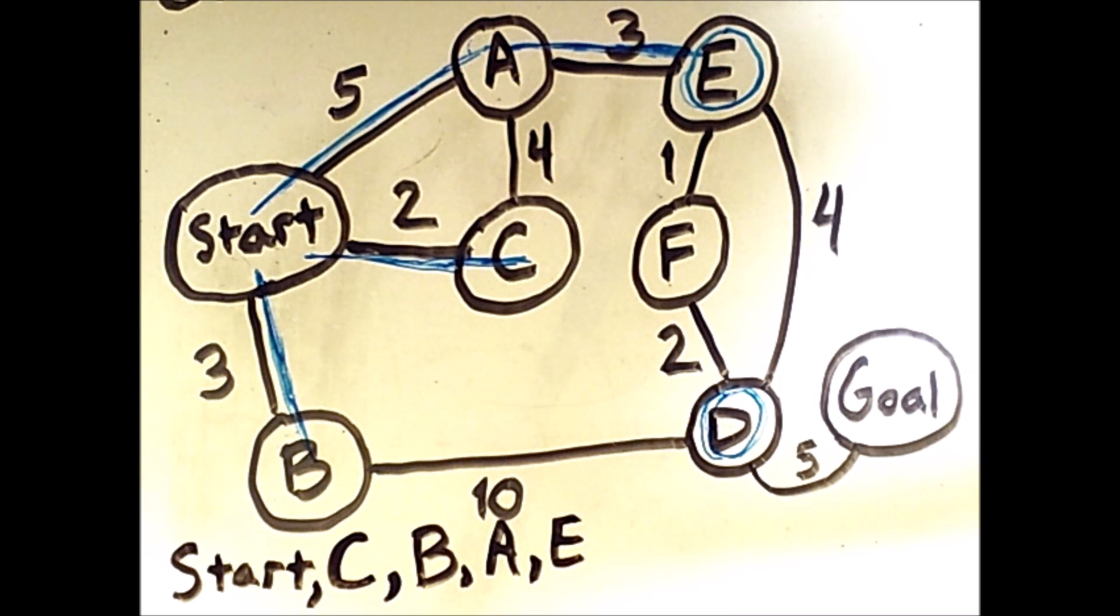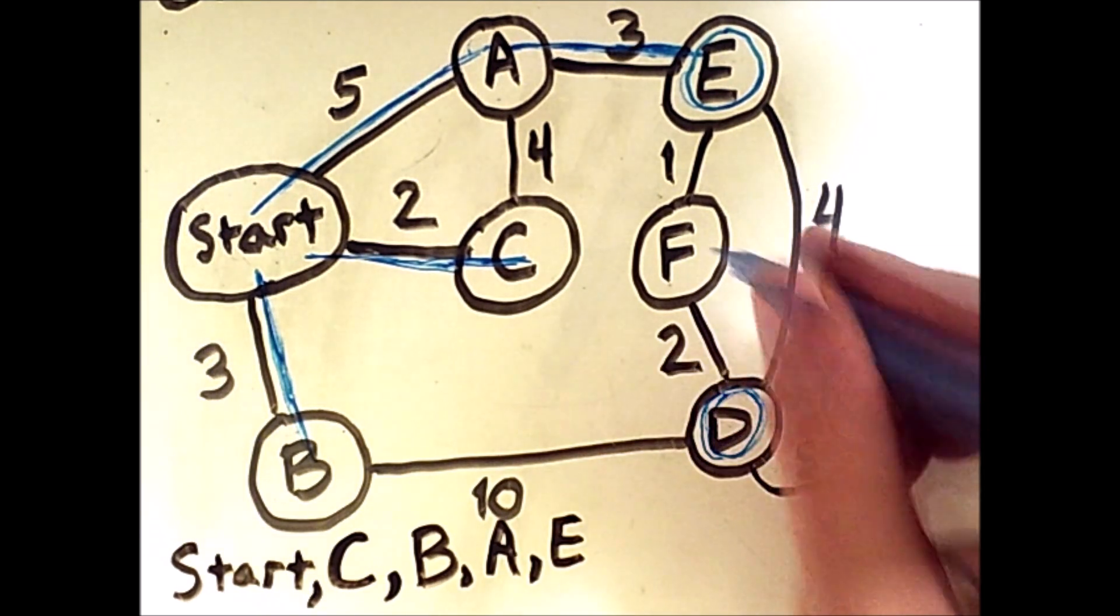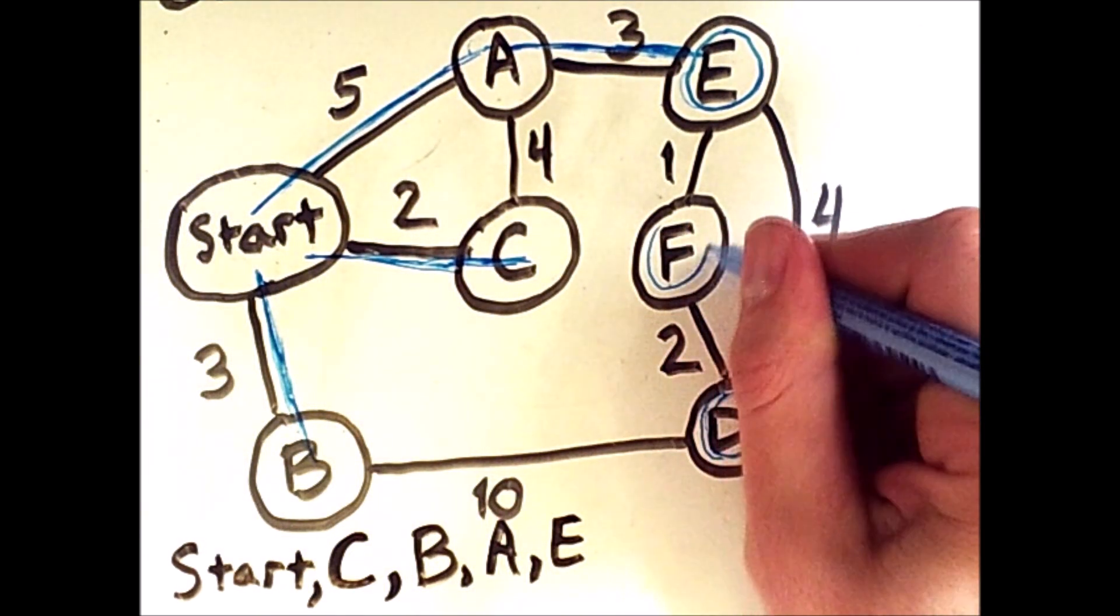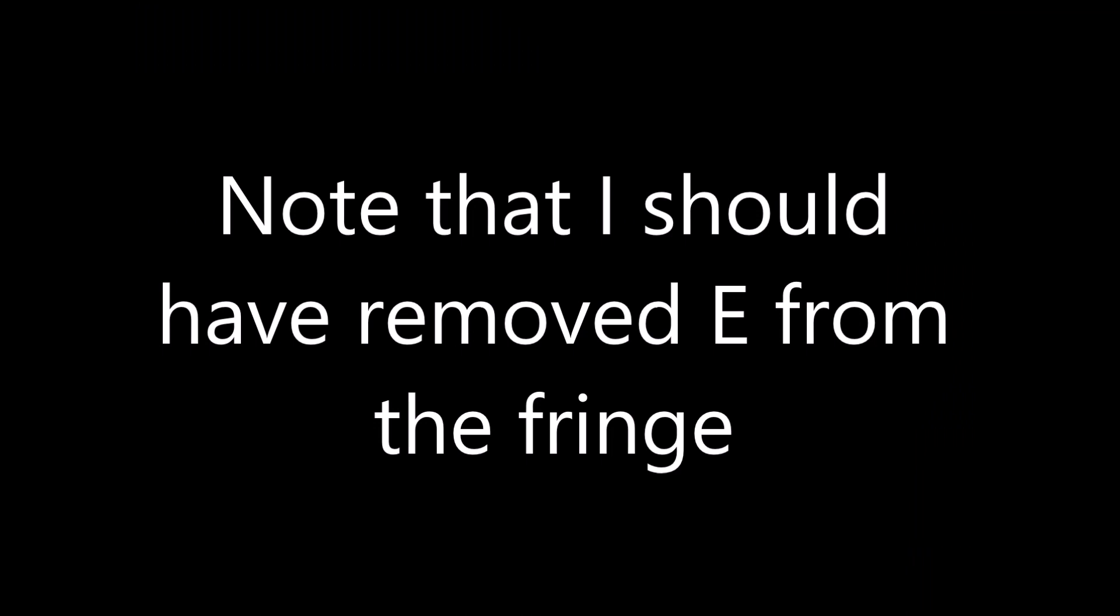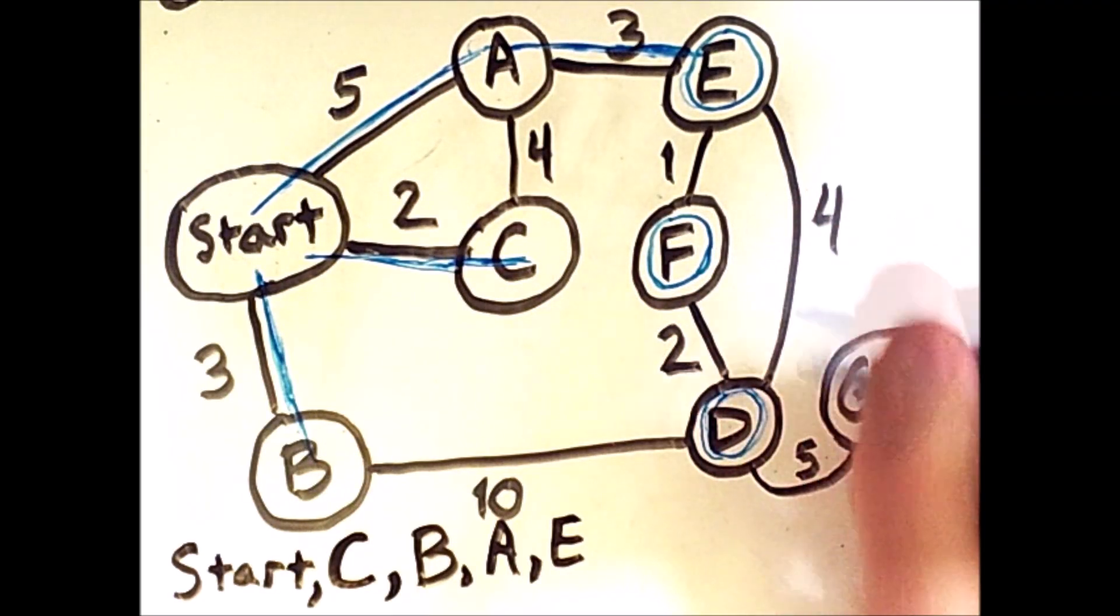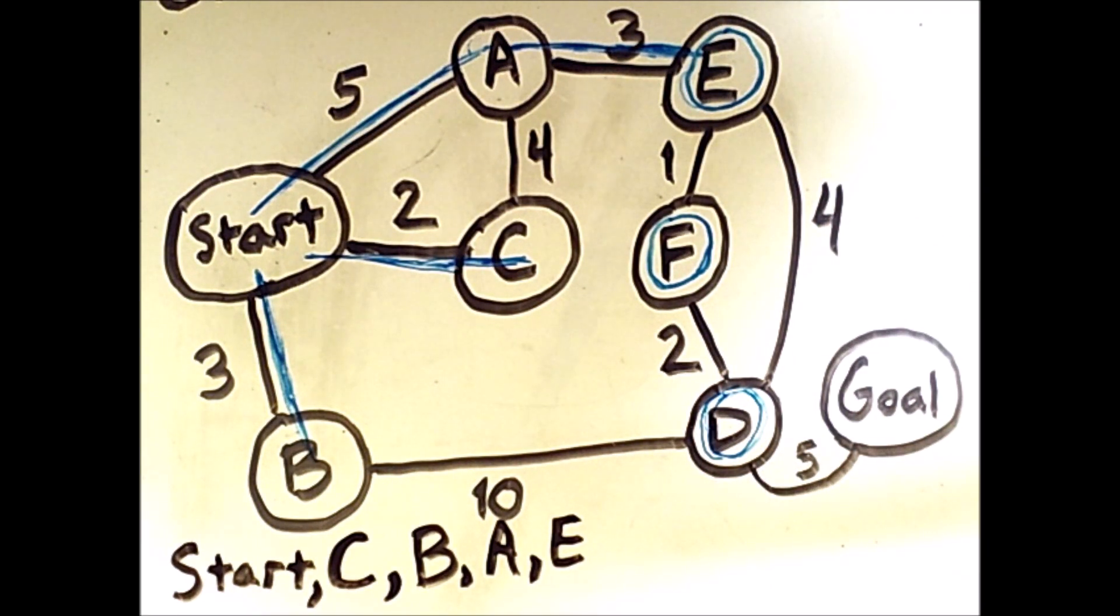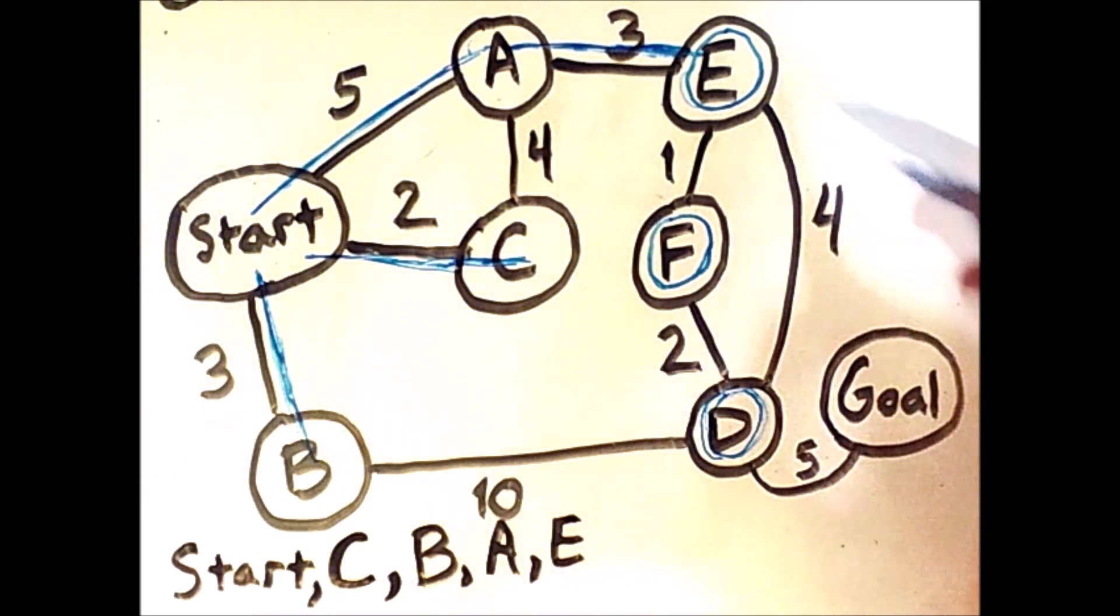At this point, we can add new points to the fringe. We have F on the fringe. And we haven't visited D yet, so we're technically also considering visiting D via E.